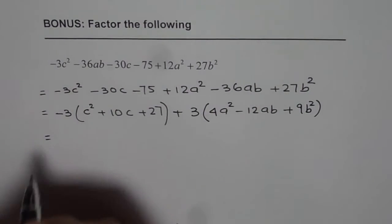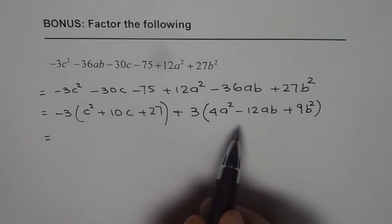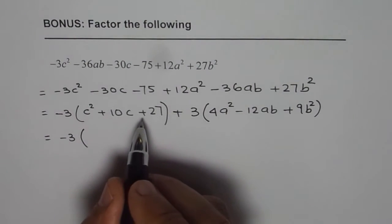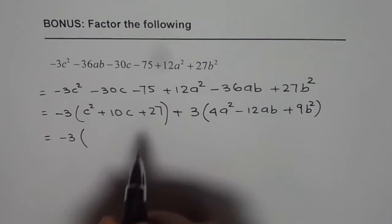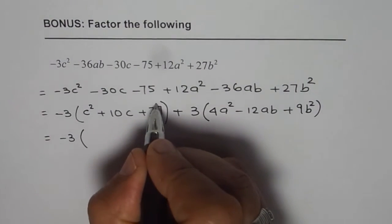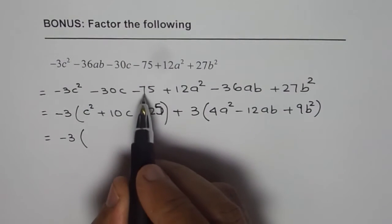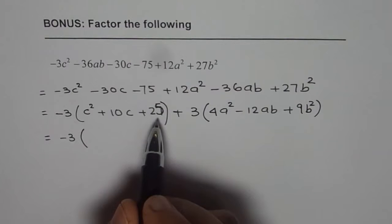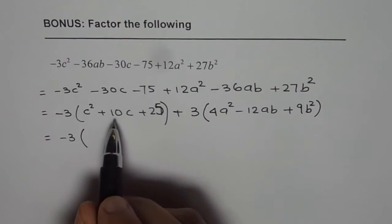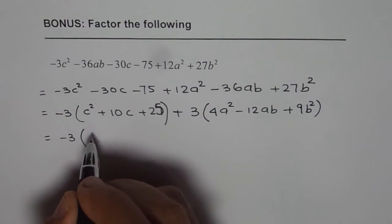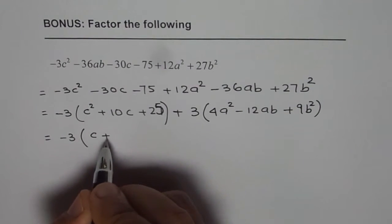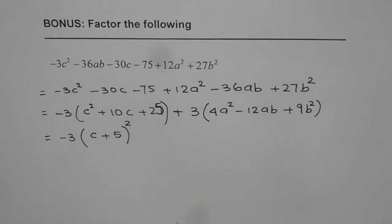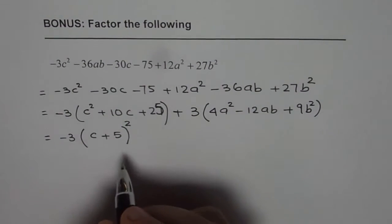Now you can factor these. 75 divided by 3 is 25. Now 25, 5 times 5 is 25. When you add that you get 10. So that means we could write this as c plus 5 times c plus 5 whole square. So that is how we could write this.